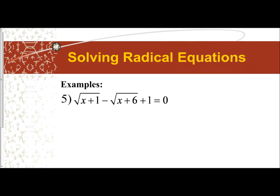We're going to continue our examination of how to solve radical equations with the following two examples. In example five, we have the square root of x plus one minus the square root of x plus six plus one equals zero.